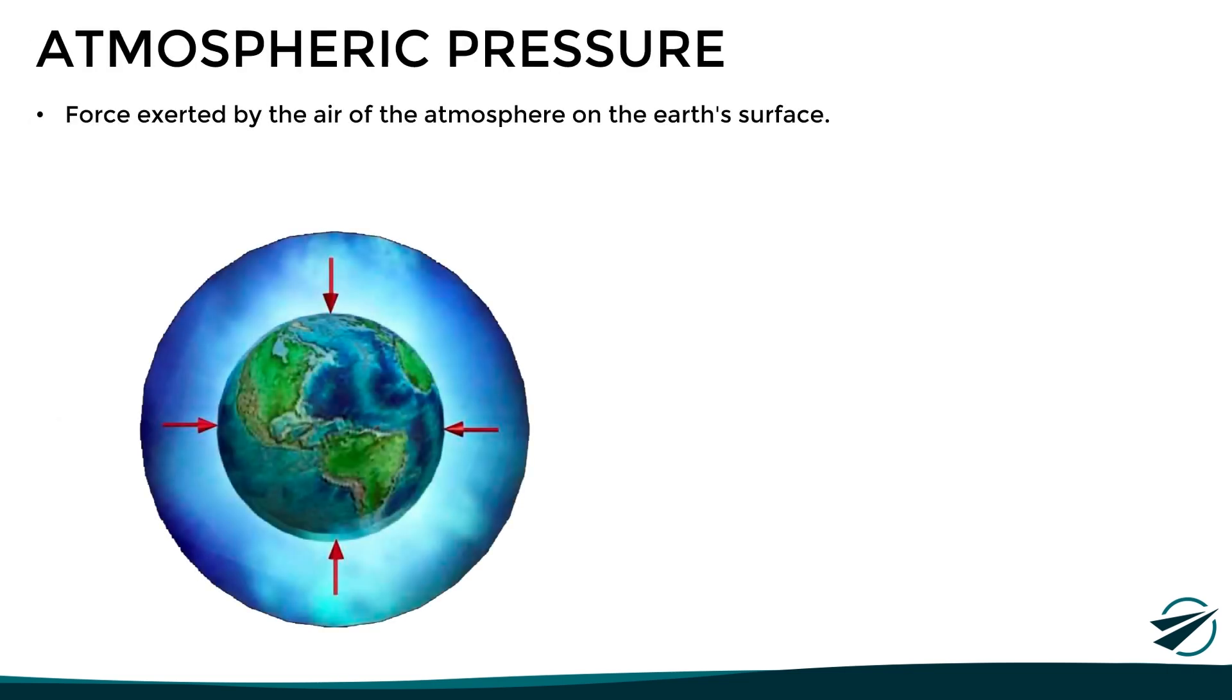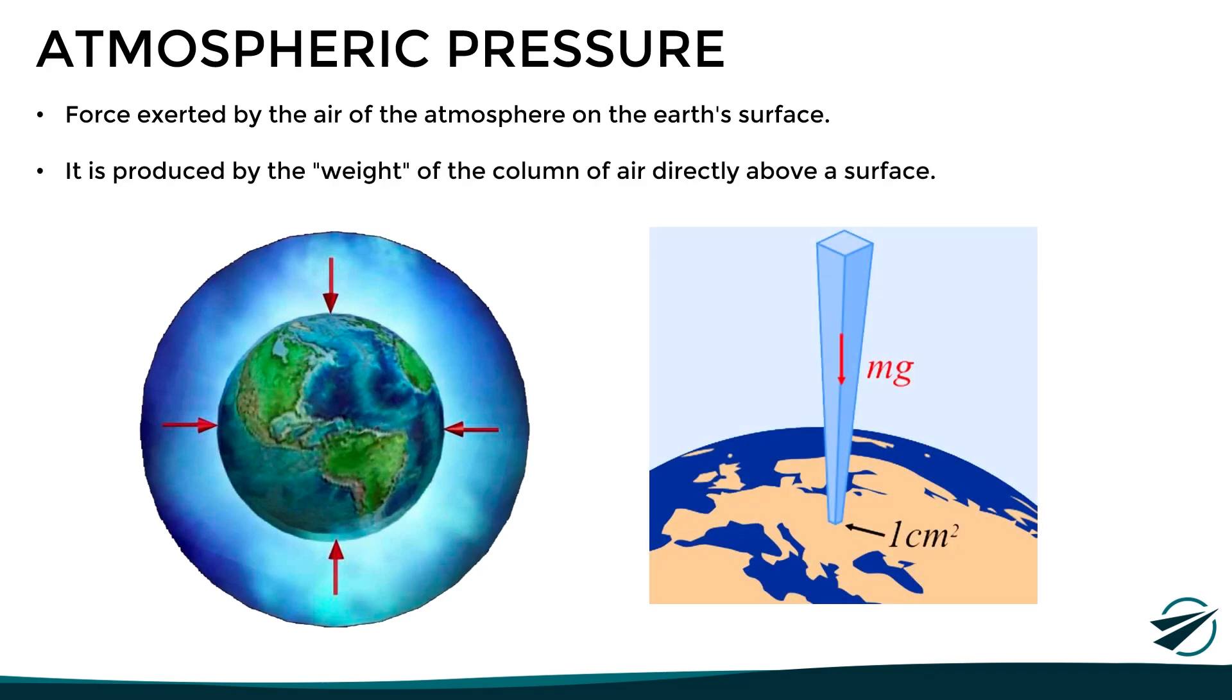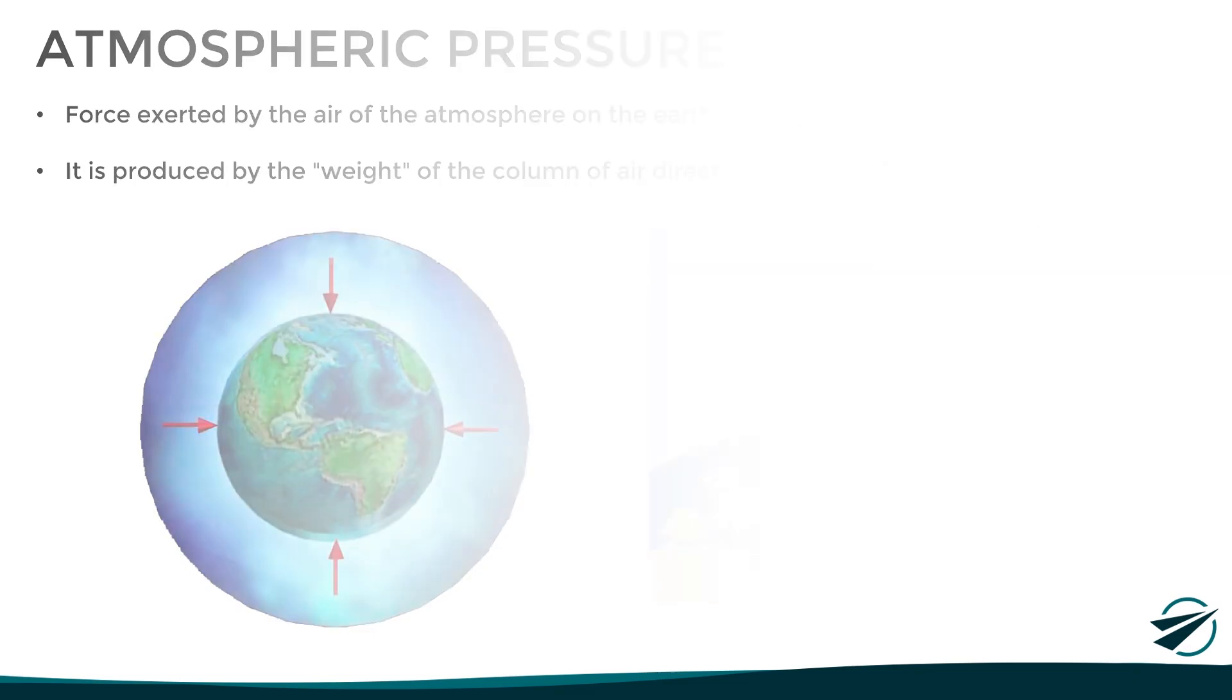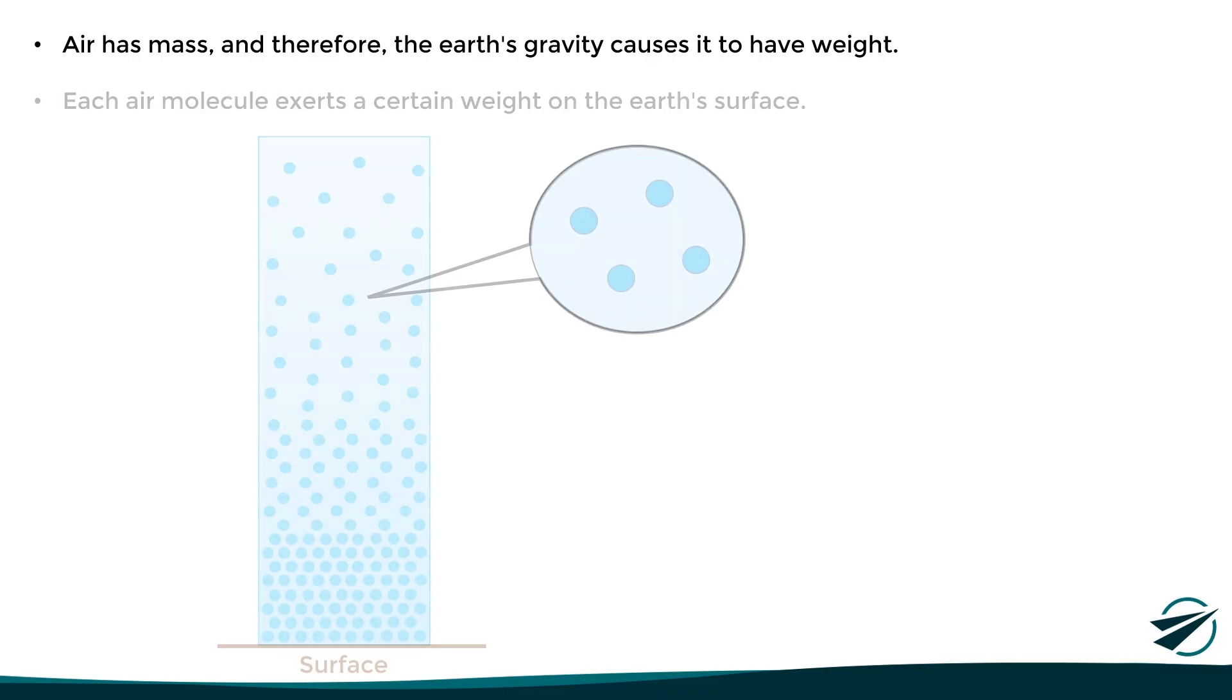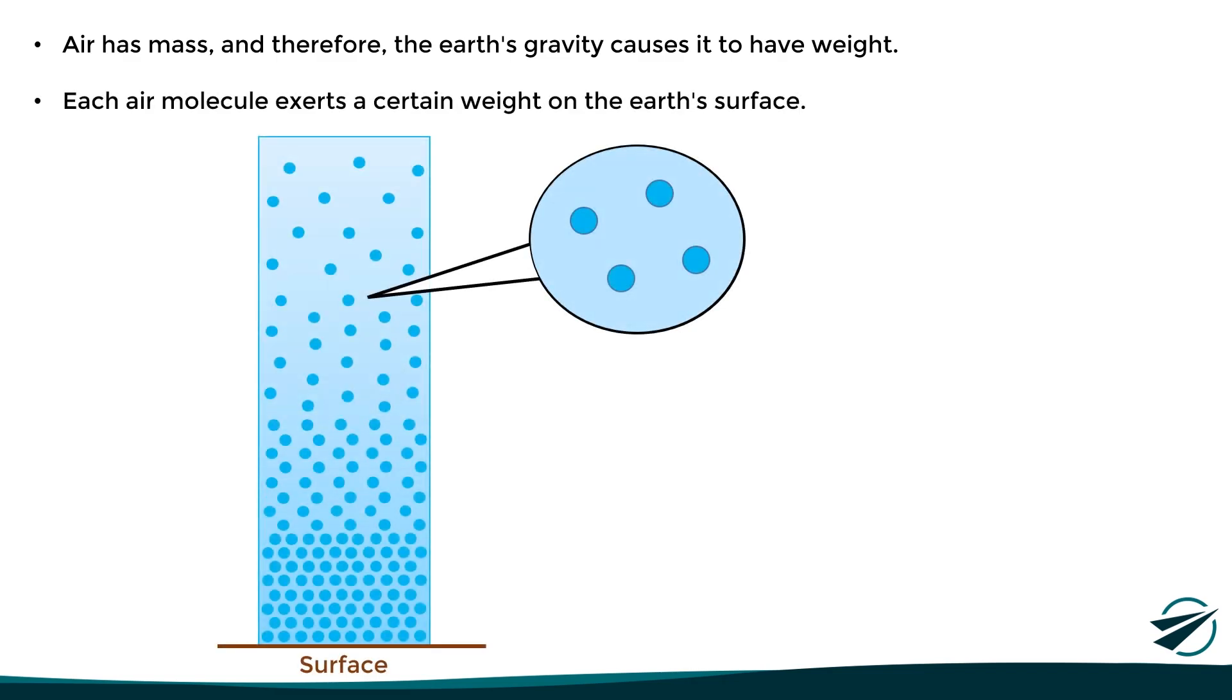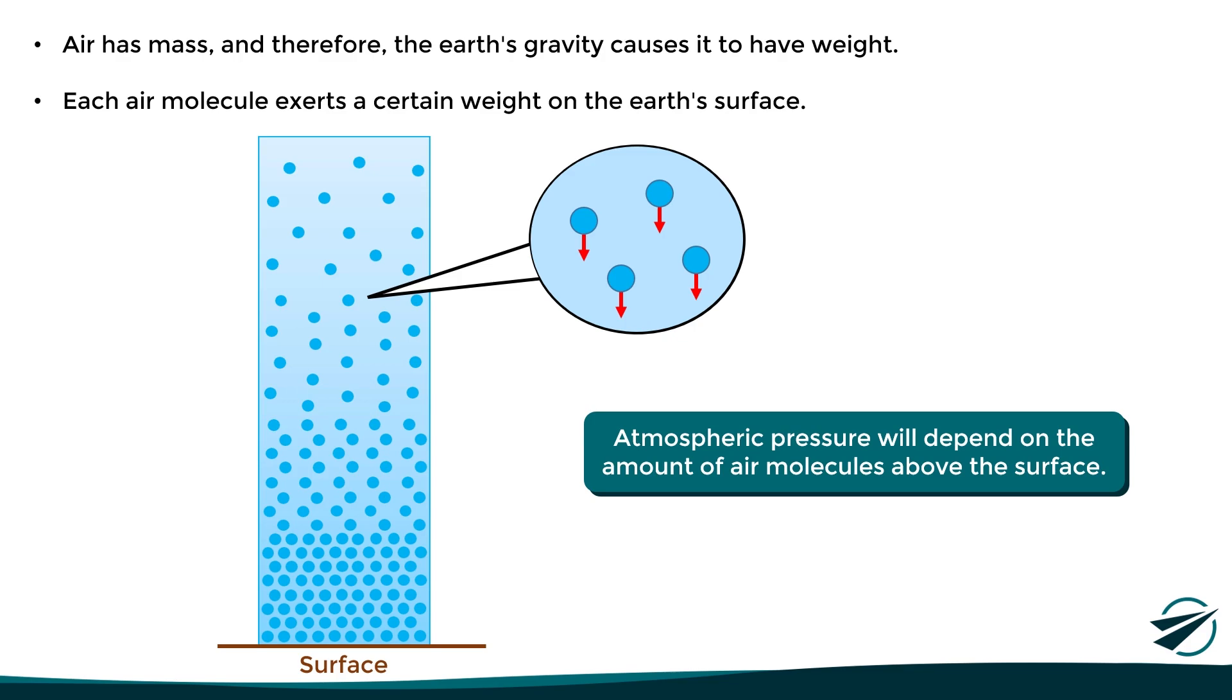This is the force exerted by the air of the atmosphere on the earth's surface, and it is produced by the weight of the column of air directly above a surface. Now, this concept may sound rather abstract, since in practice, and in our daily life, it seems that air has no weight. However, the truth is that the air has mass, and therefore, the earth's gravity causes it to have weight. This means that each air molecule exerts a certain weight on the earth's surface. And therefore, we can affirm that atmospheric pressure will depend on the amount of air molecules above a surface.